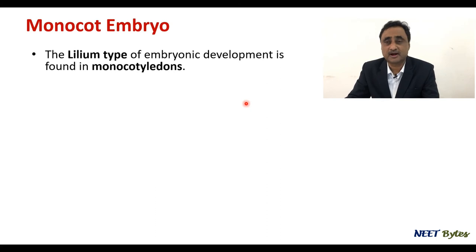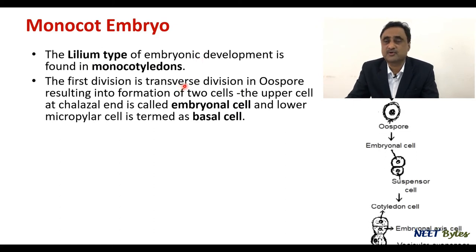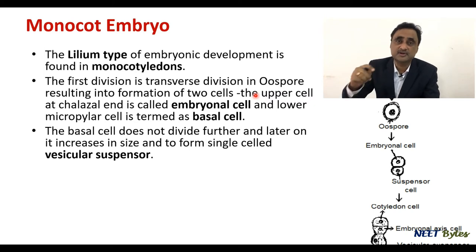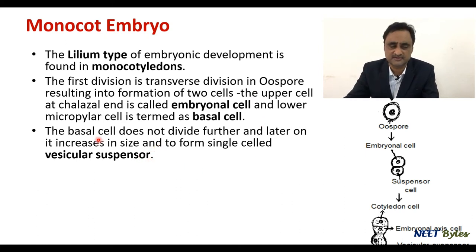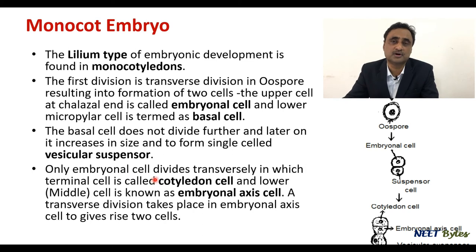Now let's talk about the monocot embryo. As mentioned, up to the four-cell stage the division remains the same. It is the linium type of embryonic development found in monocotyledons. The first division is transverse, giving rise to an embryonal cell and a suspensor cell. It is only the embryonal cell that participates in development; the basal cell forms at most one or two cells and does not participate in forming any part of the embryo. Unlike dicot, where the hypophysis of the suspensor participates in root cap formation, here that is not the case. The basal cell instead increases in size to form a single large vesicular suspensor, pushing the embryo to absorb food from the nutritive tissues.